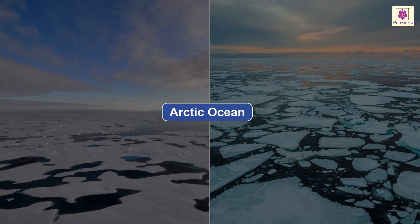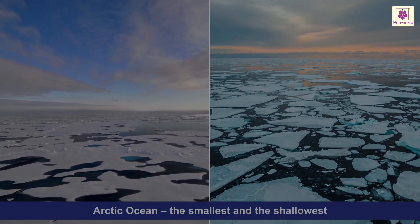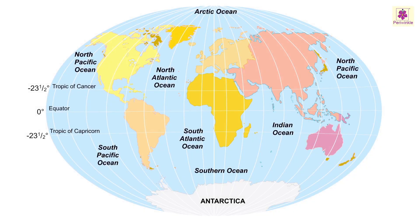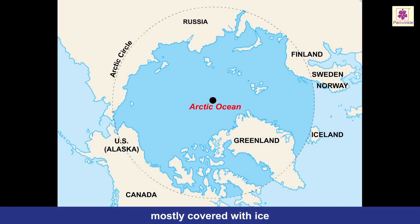The Arctic Ocean is the smallest and the shallowest of the oceans. It is located in the Northern Hemisphere, mostly within the Arctic Circle, and is mostly covered with ice. Russia, Norway, Iceland, Greenland, Canada, and the United States are the six countries that border the Arctic Ocean.